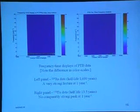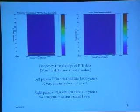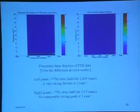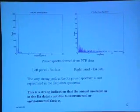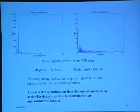This is the German experiment. On the left is radium, on the right europium. There's a tremendously strong signal at one cycle per year in radium and nothing in europium. This by itself tells you that it is not an instrumental or environmental effect, because you have the same instrumentation and same environment for both radium and europium — if the modulation were due to environmental effects you would see the same signal in both data sets, and you don't. The power spectrum shows a peak of about 500 in radium and practically nothing in europium.